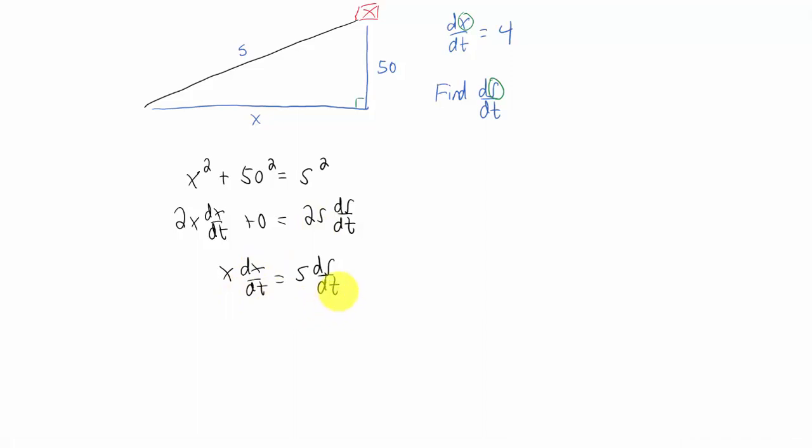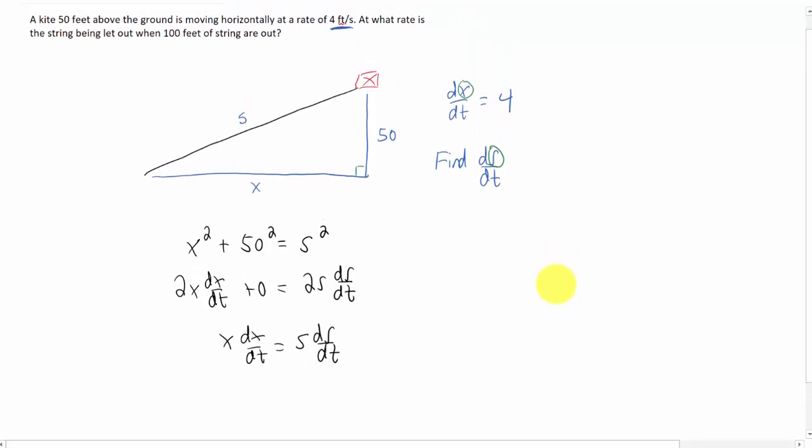Let's see what we know and what we need to find. Back to the question, we are given that dx/dt is 4, good. We don't know X yet, but we do know that we want this rate when 100 feet of string are out. This means S equals 100. So we know this S value here.